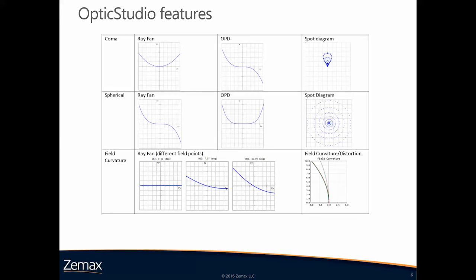For coma, that would be ray fan, OPD, and spot diagram. In the spot diagram you can see the comet shape. In the OPD you can see the cubic form, and in the ray fan the parabola. For spherical aberration, once again it's ray fan, OPD, and spot diagram. In the spot diagram you can see rings around the tight core. The OPD shows a quartic form and the ray fan a cubic form. For field curvature, you can look at the ray fan and the difference in slope between different fields of view on the Y plot, and the field curvature distortion feature will help you identify this aberration as well.